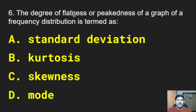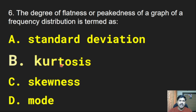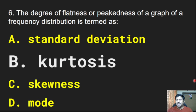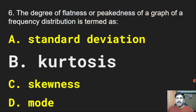Next question: The degree of flatness or peakedness of a graph of a frequency distribution is termed as — standard deviation, kurtosis, skewness, or mode? Correct answer is option B, kurtosis. Kurtosis is a statistical measure used to describe the degree to which scores cluster in the tail or peak of a frequency distribution. Kurtosis is of three types: mesokurtic, leptokurtic, and platykurtic.